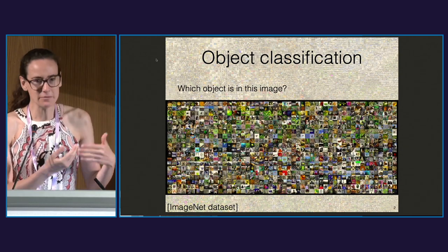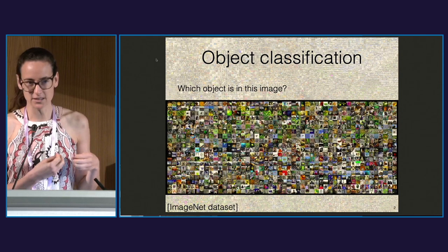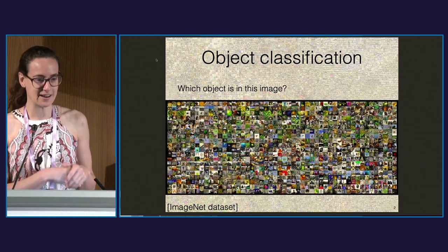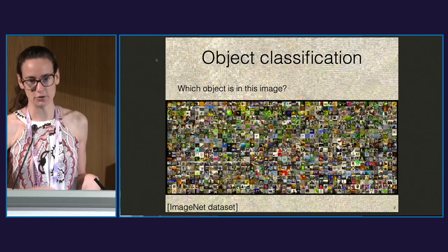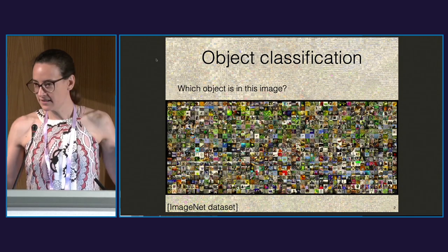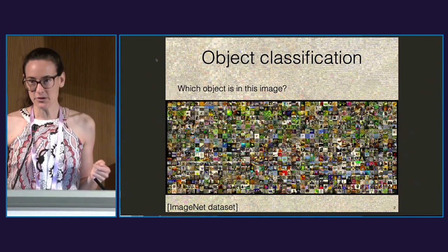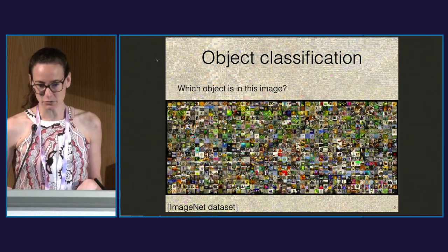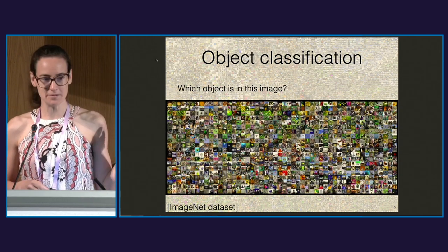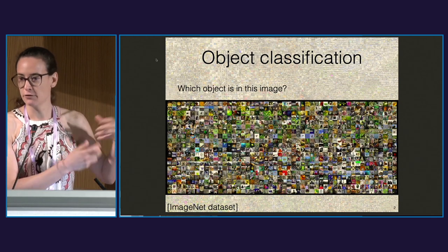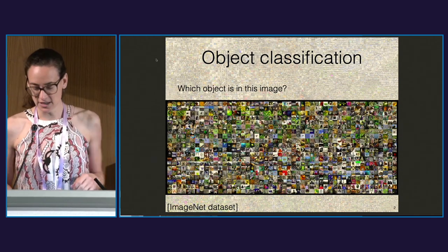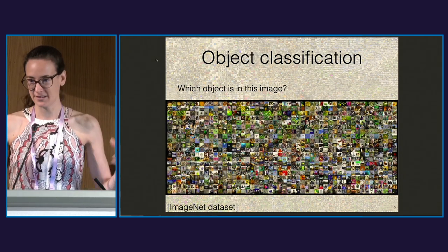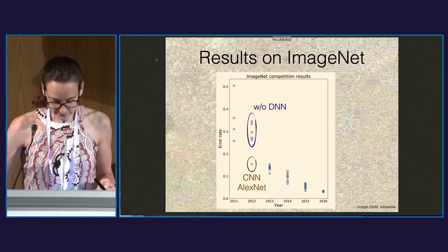Deep learning had been around for many years but was not the main trend for several reasons — big data and big computational power were part of what changed that. There was a large dataset open to the community called ImageNet, and deep learning was tried there in a very engineered way. The weights and patterns of these models are now almost the only ones being used and researched.